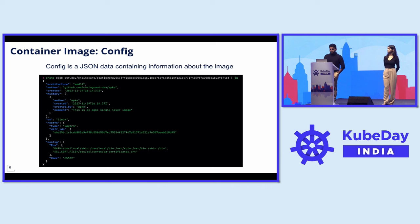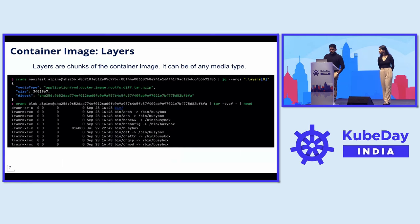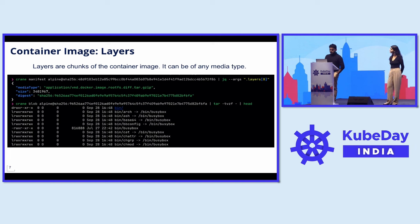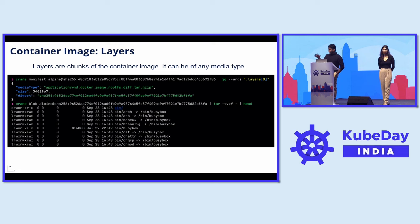The config is a JSON object that contains the history, which includes a list of authors. It contains OS information as well as environment variables that should be used while we start the container. Layers are basically chunks of the executable code of the container image. When you fetch a layer and pass it through the right parser based on its media type, you get the binary stored in that layer. I like to think of this as layers of a cake — a container image needs all of its layers in the right order, along with the config to wrap it all up.